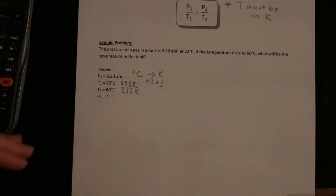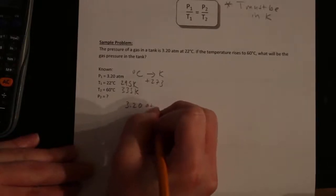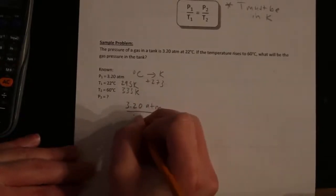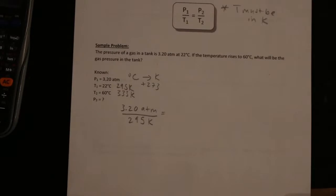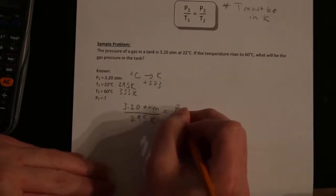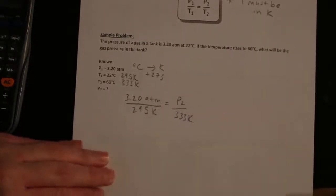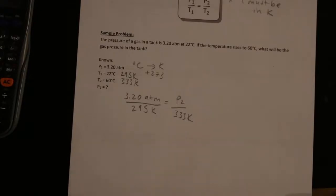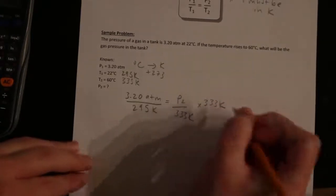So now we have all that sorted out, we can plug it into our formula. P1 is 3.20 atm divided by T1, which is 295 Kelvin, equals P2, which we're trying to find, divided by 333 Kelvin. So we want to find P2. P2 is on the top, so all we need to do is multiply both sides of the equation by 333 K. And then P2 will be isolated on its own.